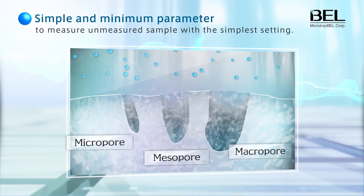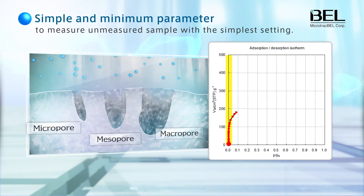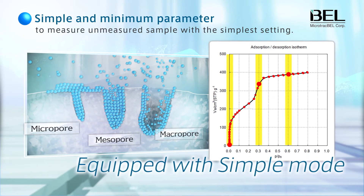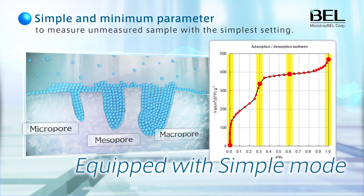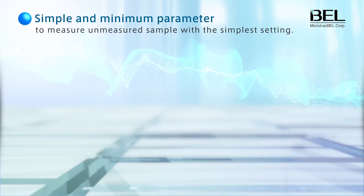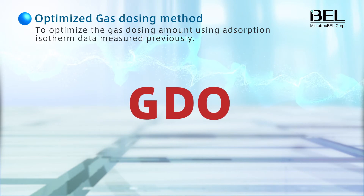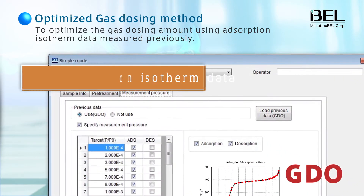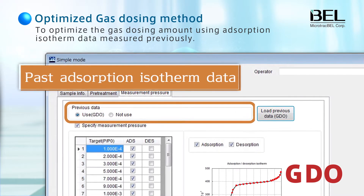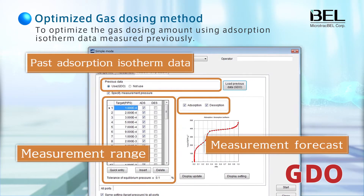The simple mode is useful for unmeasured samples with minimal setting conditions. The Gas Dosing Optimization, or GDO, automatically calculates gas dosing conditions using relative pressure and adsorption data from past isotherm data.